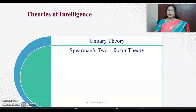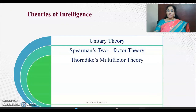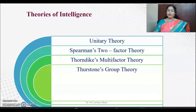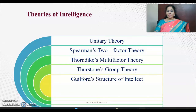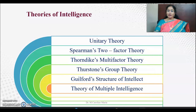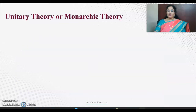What are the theories of intelligence? Unitary theory, Spearman's two-factor theory, Thorndike's multi-factor theory, Thurston's group factor theory, Guilford's structure of intellect, and theory of multiple intelligence. Let us see one after the other.